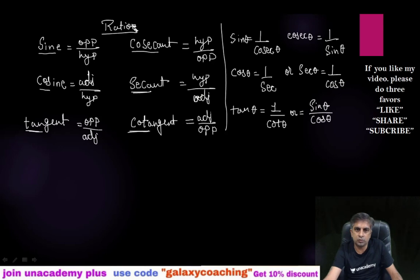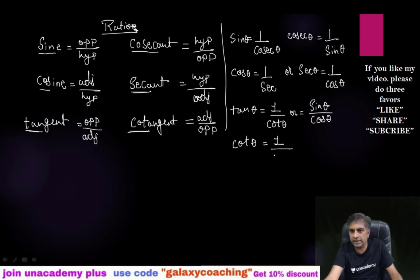If you divide sine by cosine, the hypotenuse cancels out and you get opposite by adjacent, which is tan. So we can use that. And cot theta equals one by tan theta, or you can use cos theta by sine theta.